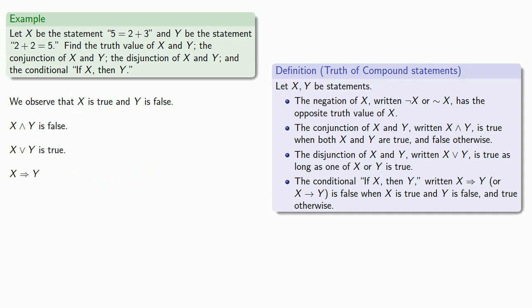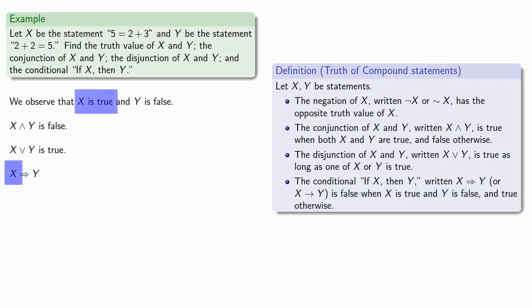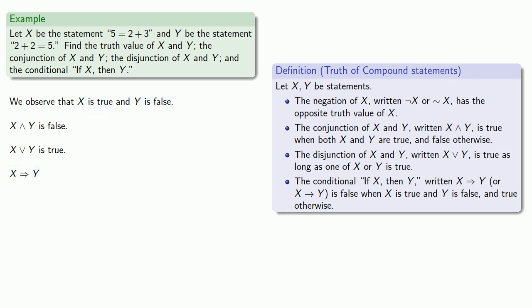For the conditional, the only time a conditional is false is when the antecedent is true but the consequent is false. Here we see that our antecedent is true but our consequent is false, and so the conditional if x then y is false.